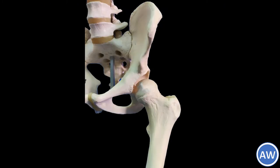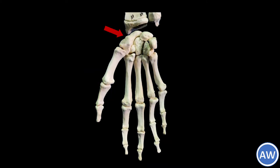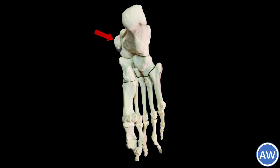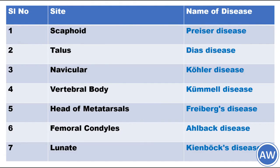Avascular necrosis is most common in the hip joint, that is in the head of the femur. Other common areas include the proximal pole of the scaphoid and the body of the talus. Avascular necrosis is rarely seen in small bones of the wrist such as the lunate.